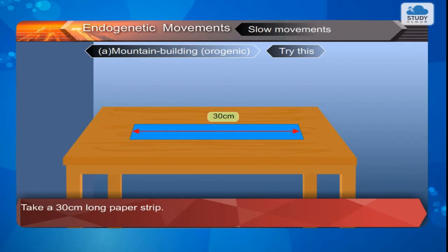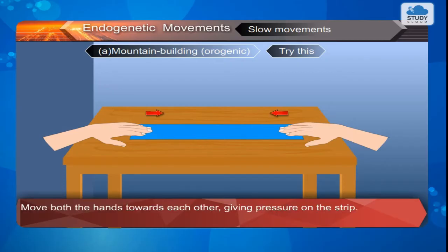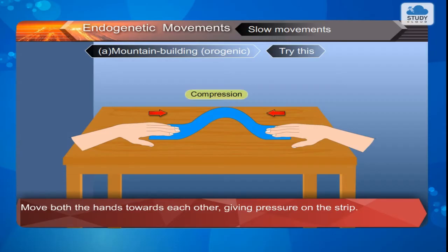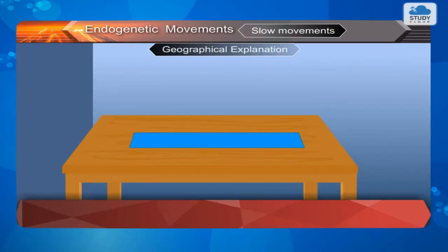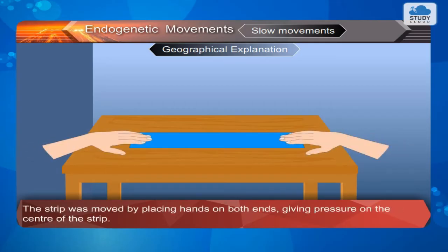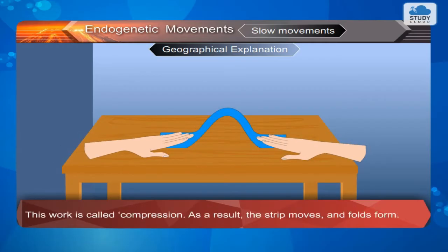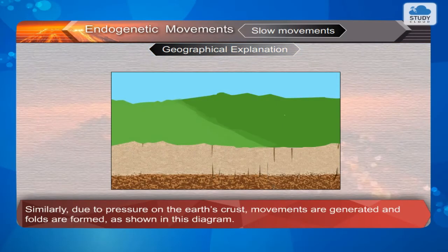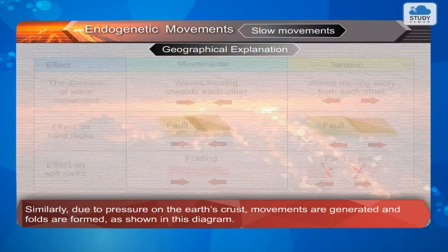Mountain building — orogenic movements. Try this. Take a 30 cm long paper strip. Place your hands on both the ends of the strip. Move both hands towards each other, giving pressure on the strip. As you see, the strip starts getting folds. Geographical explanation: The strip was moved by placing hands on both ends, giving pressure on the center of the strip. This is called compression. As a result, the strip moves and folds form. Similarly, due to pressure on the earth's crust, movements are generated and folds are formed as shown in this diagram.